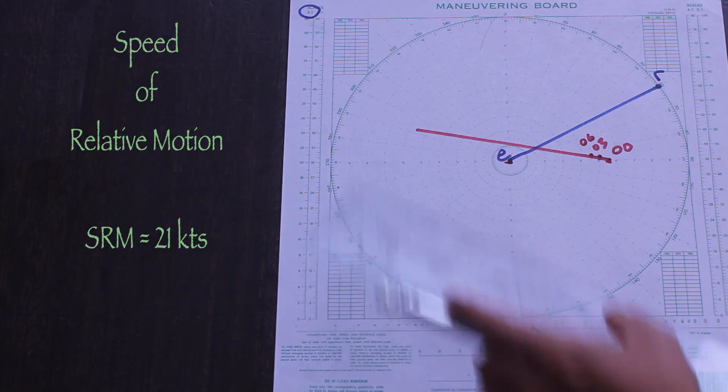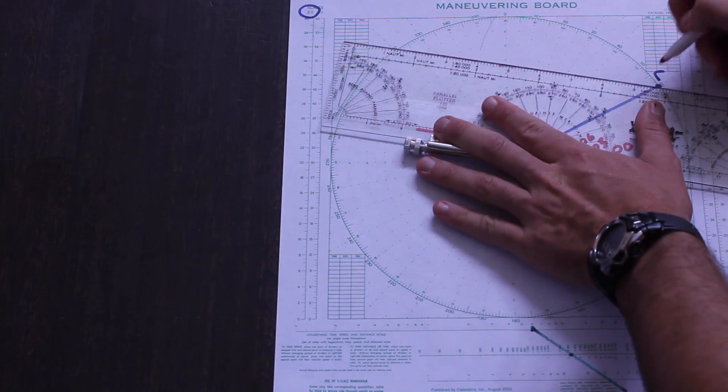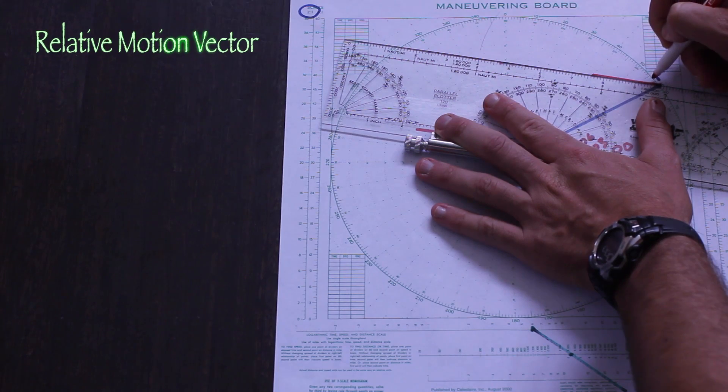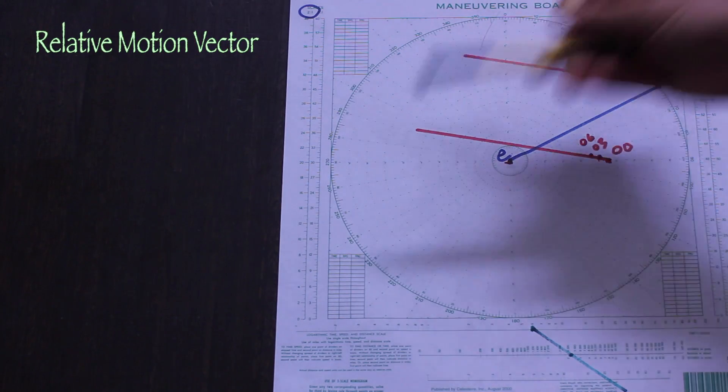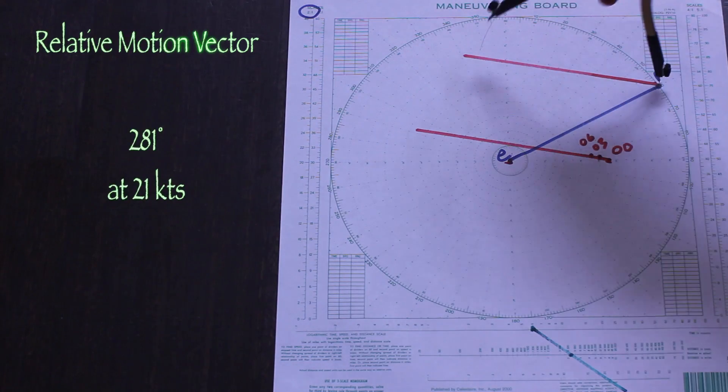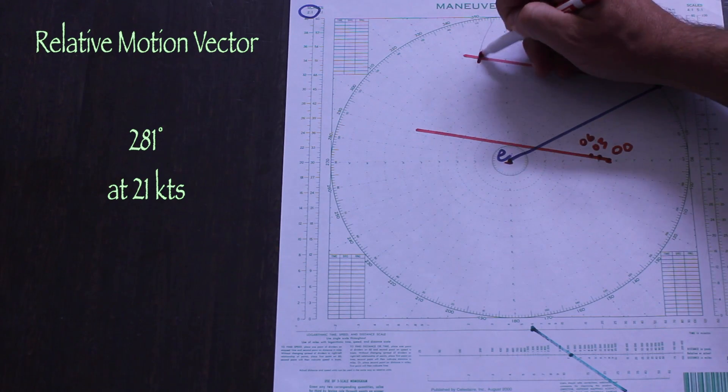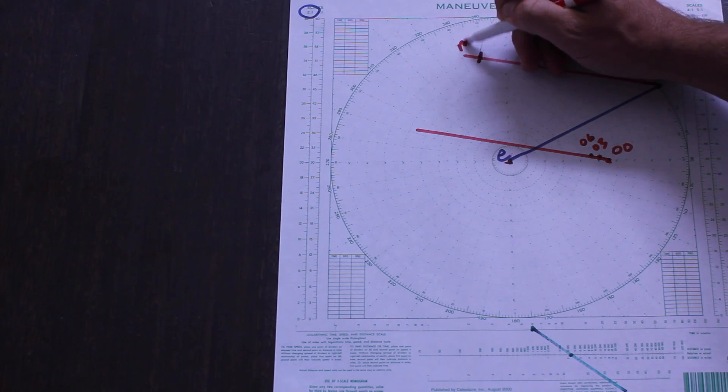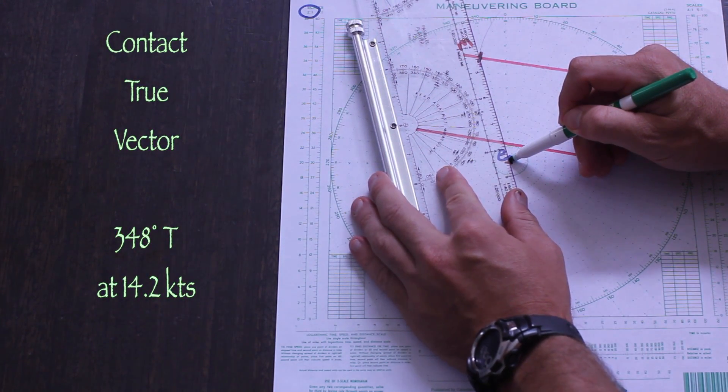Next we parallel the relative motion line to R and draw it a distance equal to the SRM. The leftover vector E to M is the contact's true course and speed. If it helps you, you can draw the little ships.